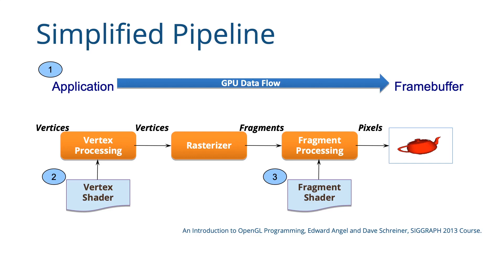Where we left off in the previous lecture is with this view of our OpenGL application program: data flows from the application program to the frame buffer and gets converted from vertices to fragments on the way. The application program loads geometry data onto the GPU, each vertex is acted upon by a vertex shader, they go through the rasterizer after being assembled into primitives, the rasterizer generates fragments, and those fragments are acted upon by the fragment shader, which finally results in pixels on the screen.